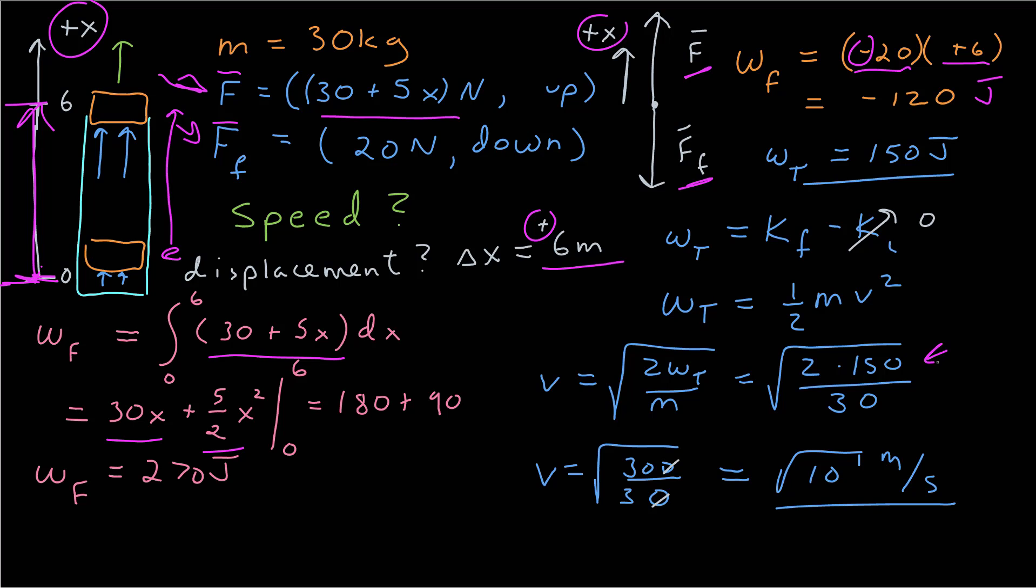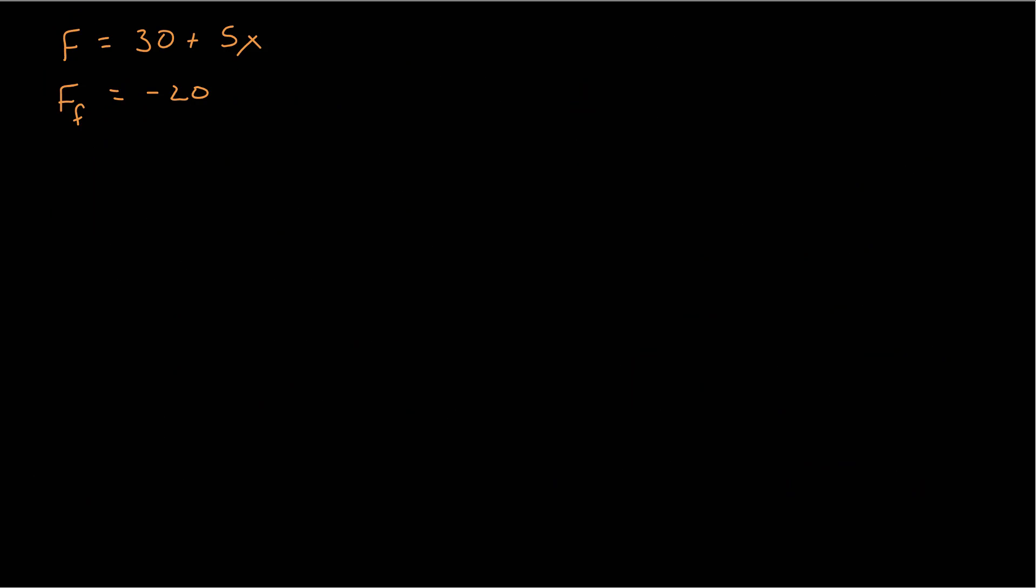Is there another way I can check this answer? Sure there is. I can go back and find the net force and see if I come up with the same work. So I've rewritten my forces here, the pushing force and the frictional force. If I add them together for their vector sum, I'm still in my one-dimensional notation, I just get 10 plus 5x. This is now my total force, so integrating it will give me my total work.